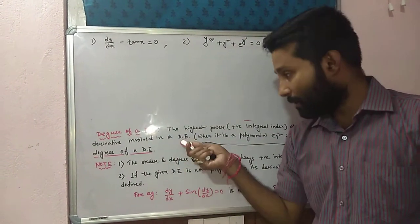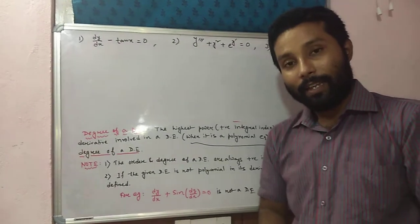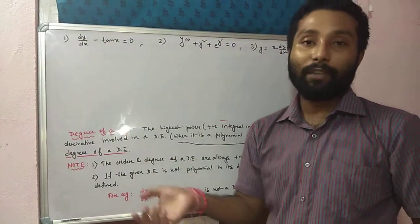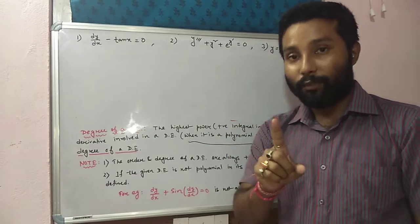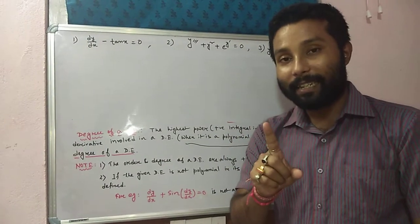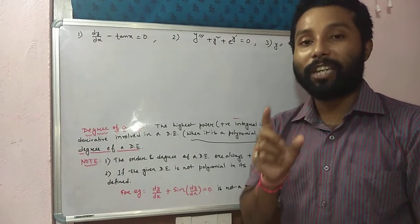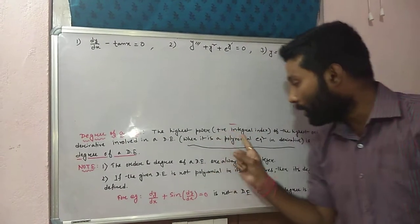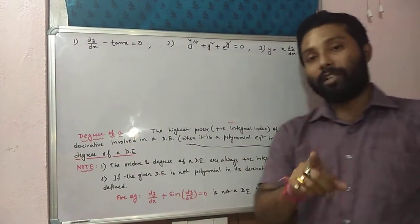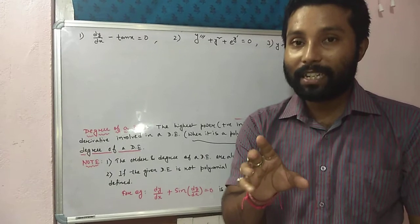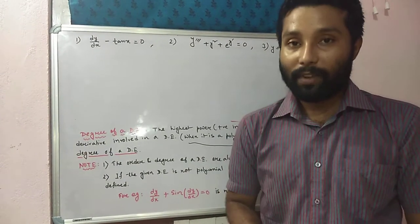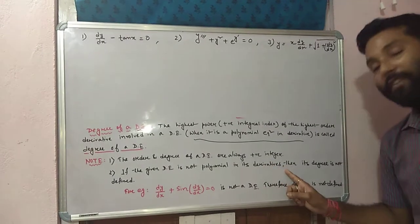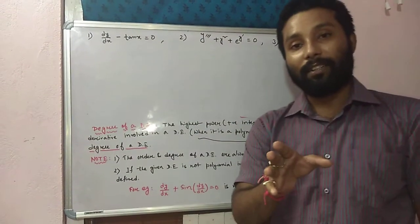Jo mein pehle definition mein bata diya tha. Differential equation dekhaan, direct order degree find out kar liya aisa nahi hai. If you want to find the degree, be careful. First of all, you have to check whether the equation is polynomial in its derivative or not. If it is a polynomial in its derivative, then only degree we can find out. If it is not a polynomial in its derivative, then degree is undefined.